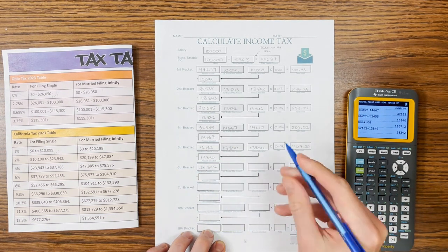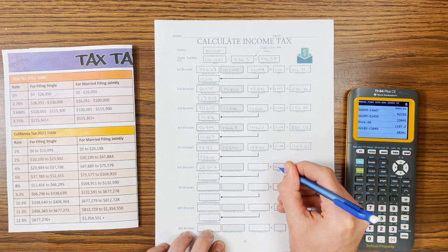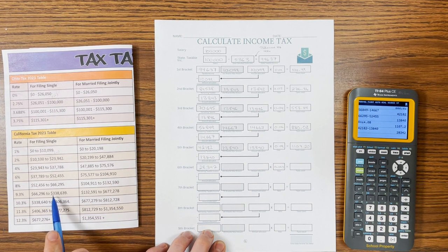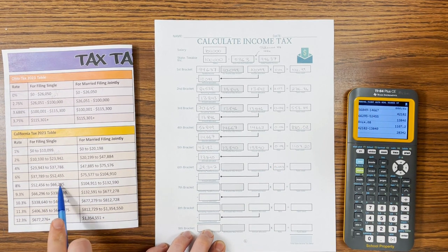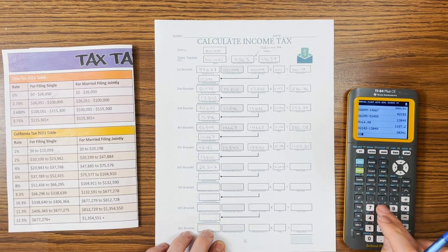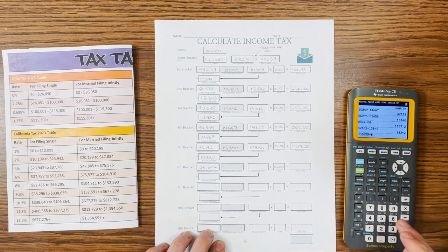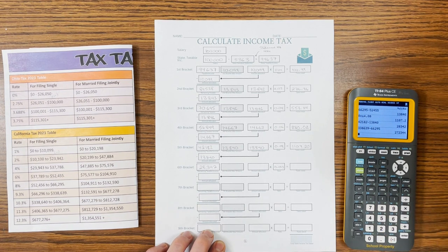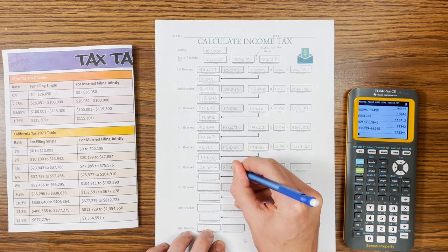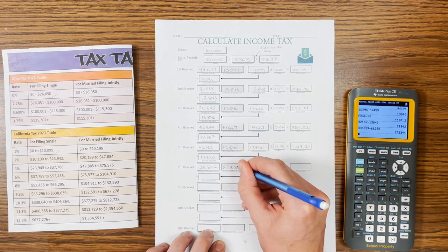All right, so now this one is the 9.3% bracket, so 0.093. And you can tell it's way larger. $338,000 is the max. And then from that $66,000 mark that we were at, $338,639 minus $66,295 that we've already taxed. And this one can hold $272,344.